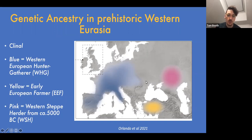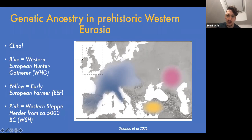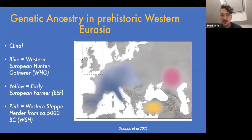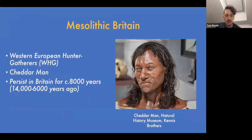Around 5000 BC, a Western Steppe Herder ancestry formed in the far eastern part of Europe around the Black Sea, derived from mixing between two populations occupying eastern Europe and present-day Iran. These three ancestries — Western Hunter-Gatherer, Early European Farmer, and Western Steppe Herder — mixed together through the early Holocene and prehistory to form the prehistoric populations of Europe.